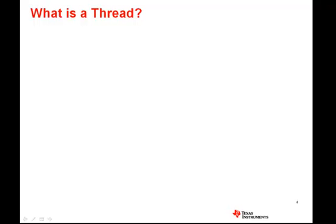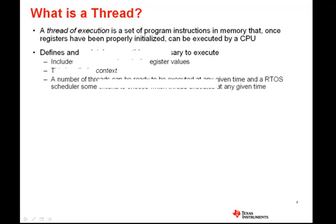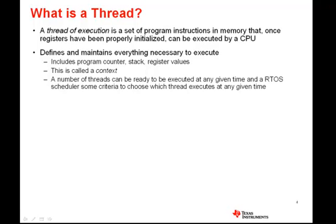In this series of BIOS tutorials, we will often make reference to threads, so it might be good to just spend a minute to discuss what this means. The exact definition of a thread can vary depending on the processor, architecture, and operating system being used. For the purposes of our discussion here, we will define a thread of execution as a set of program instructions that, once registers have been initialized, can be executed by the CPU. The CPU can switch between different threads over time, and to do this, each thread defines a context that includes information about the program counter, stack, and critical registers.